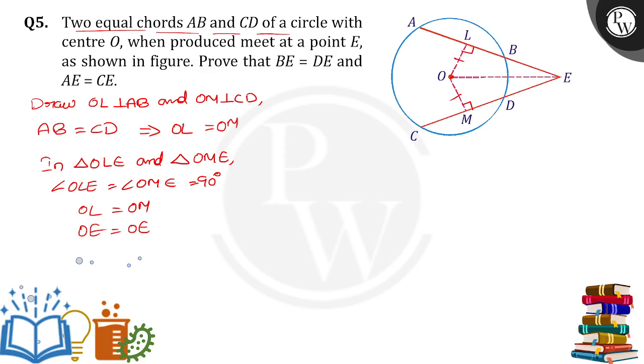So when OE is equal to OE, we can say that by using SAS congruency criterion, triangle OLE is congruent to triangle OME.